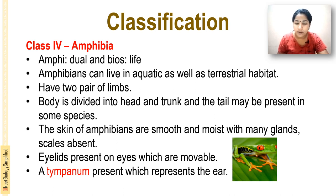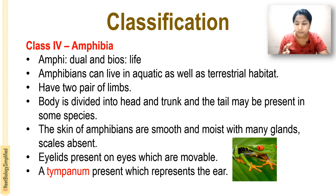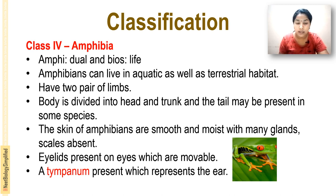The body is divided into head, trunk, and tail — which may be present in some species. The skin of amphibians is smooth and moist. They have movable eyelids on their eyes.